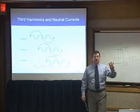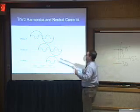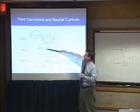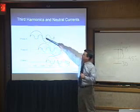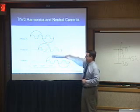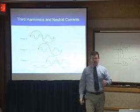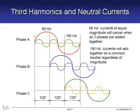The problem is third harmonics — they repeat every 120 degrees. The third harmonic of phase A is in phase with the third harmonic of phase B, and that's in phase with the third harmonic of phase C. So the third harmonics not only do they not cancel like the 60 Hz currents do, they add if they happen to be on a common neutral.